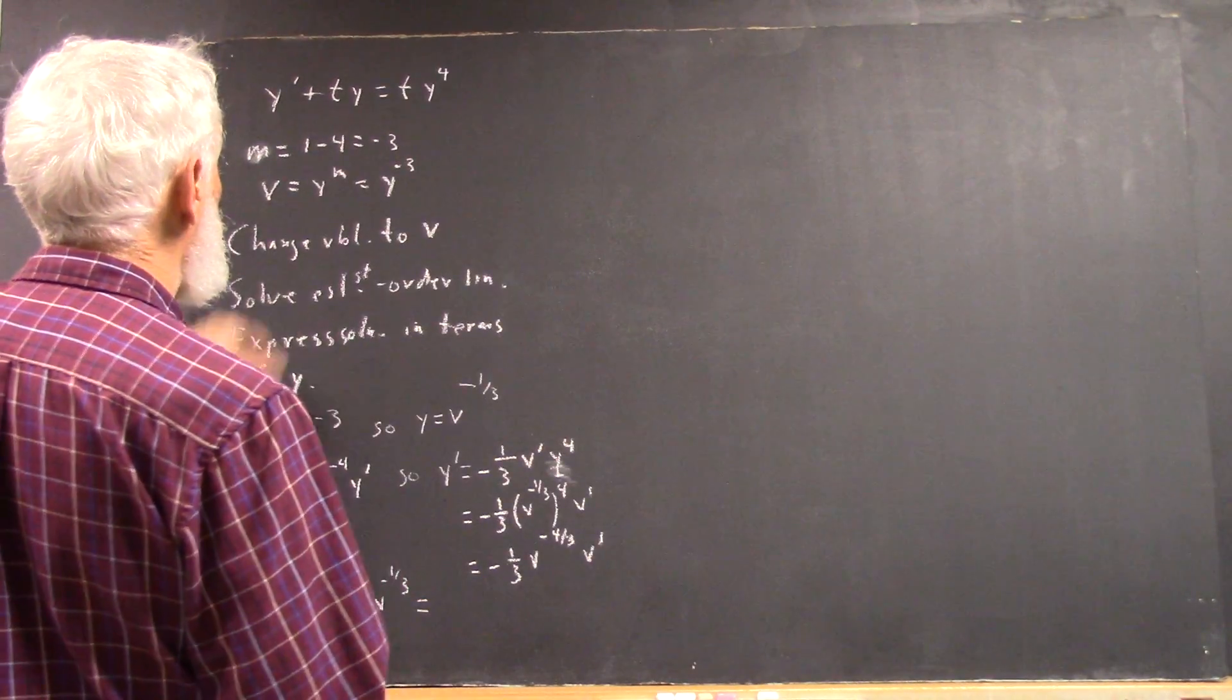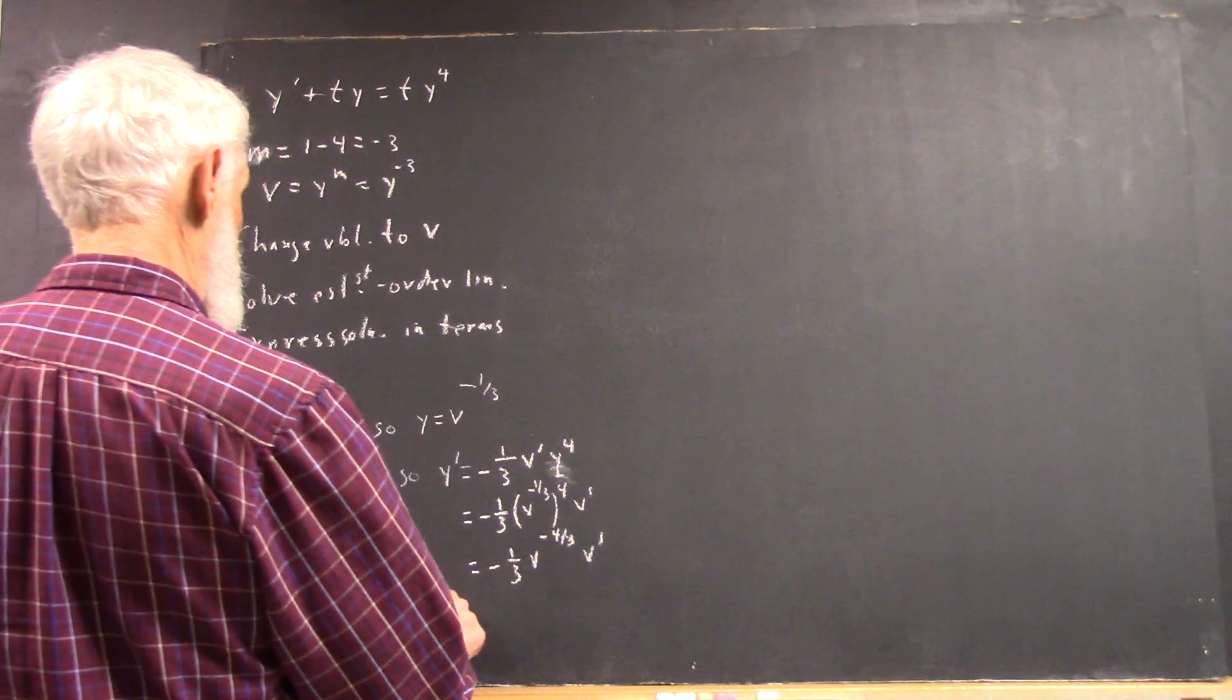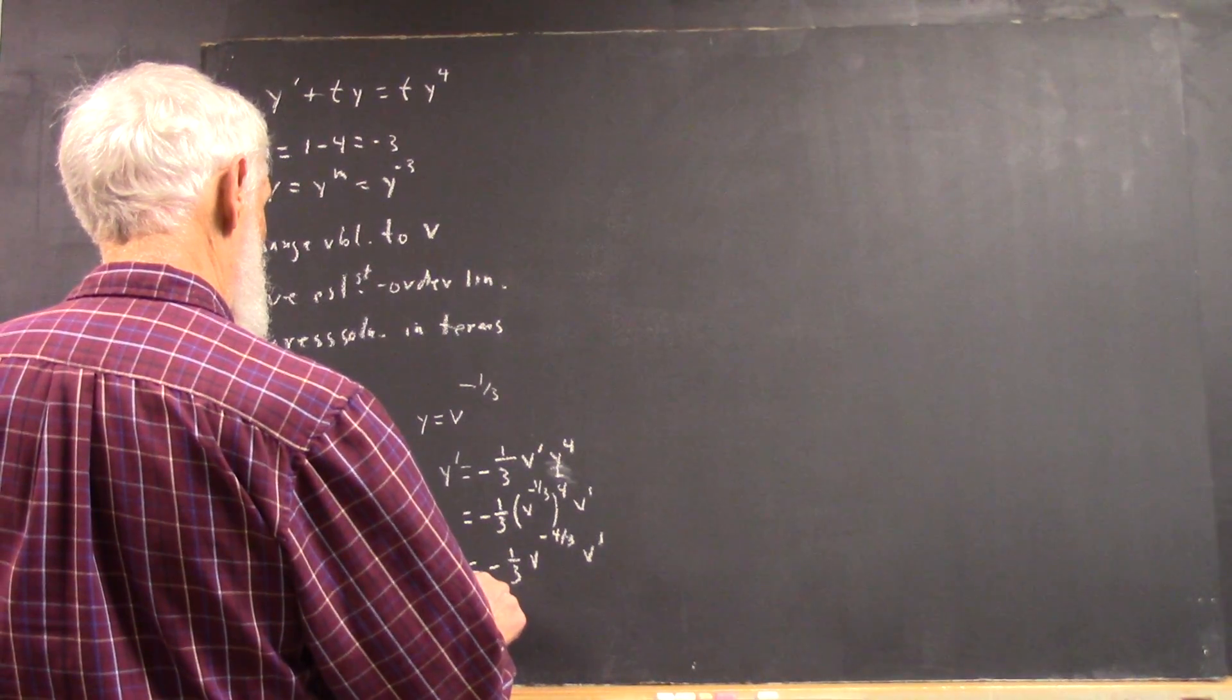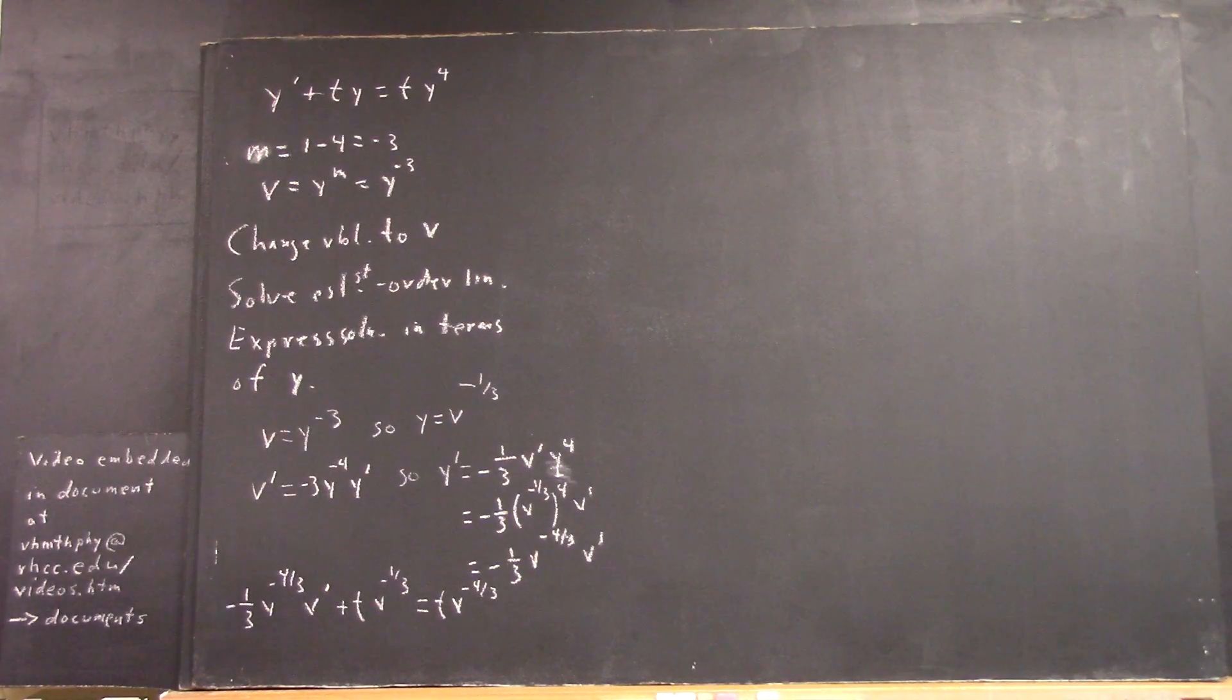And that equals t y to the fourth, which is t times v to the negative one-third to the fourth, which is v to the negative four-thirds.